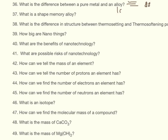Really important words to get in there: layers, slide. Because the pure metal can slide, it means it's soft, and because the alloy doesn't have any layers and can't slide, it means it's really hard.